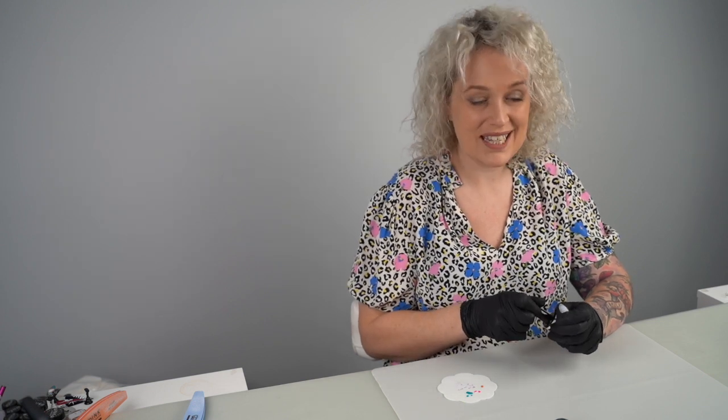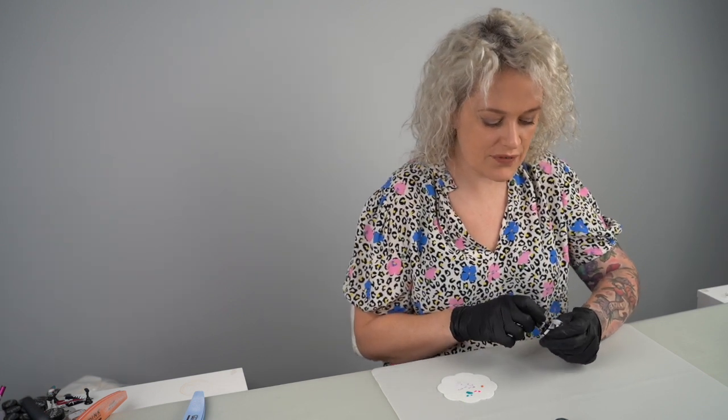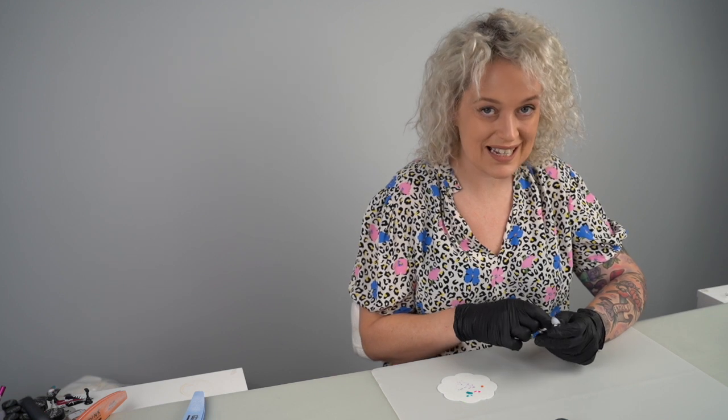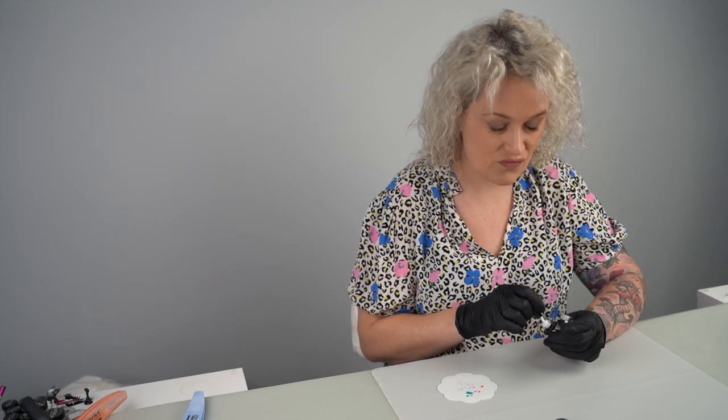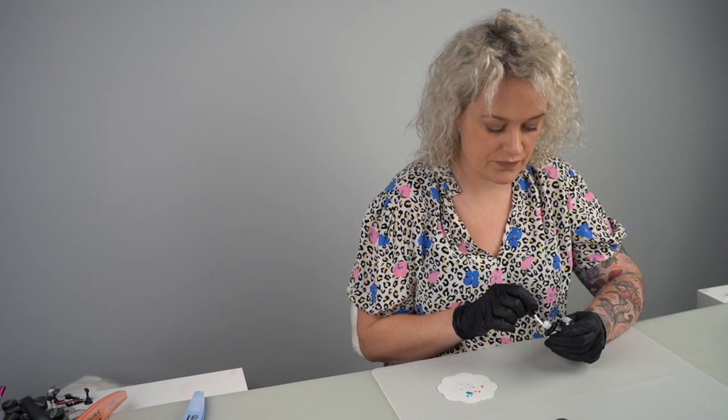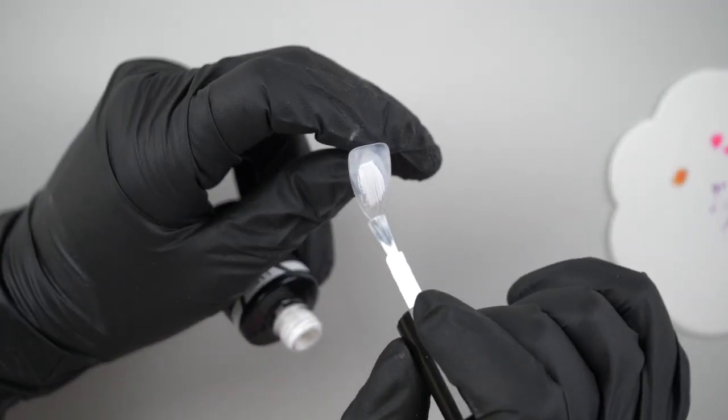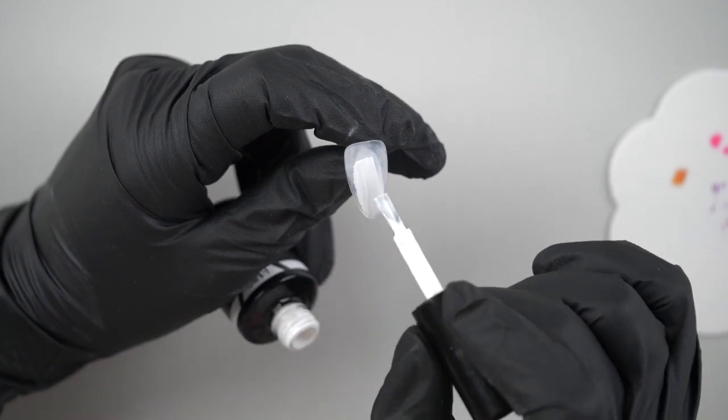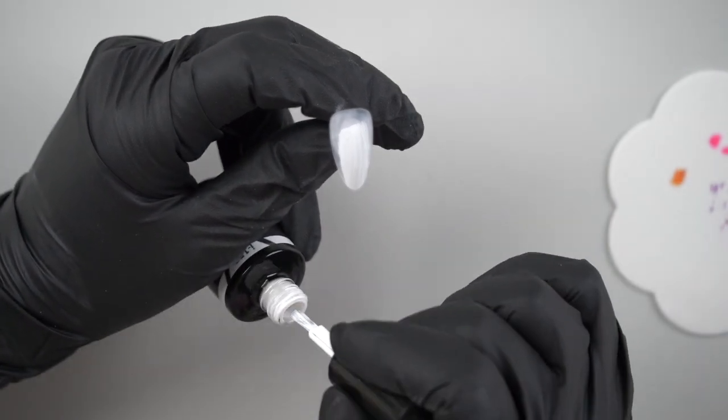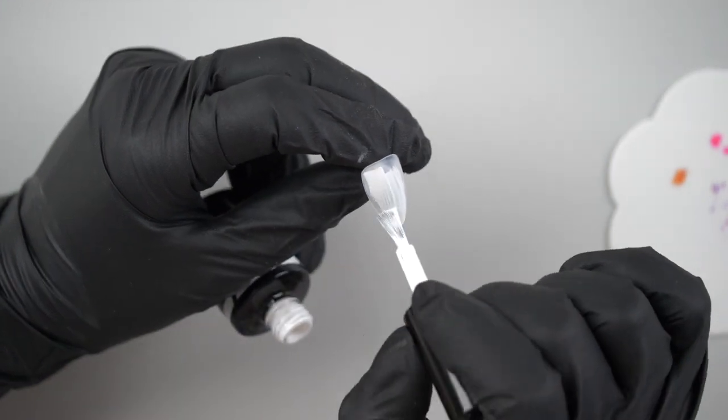I'm going to do a base color of i156. If you're using this, make sure you do it nice and thin so that it doesn't wrinkle when you put it in the lamp. When I'm using this, I kind of feel like I'm scratching it on a bit, so it's nice and thin.